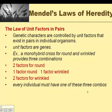Mendel also put forward some laws of heredity. The first law is the law of unit factors in pairs: genetic characters are controlled by unit factors that exist in pairs in individual organisms. Mendel didn't know about genes, chromosomes, or meiosis, so he referenced genes as unit factors. In a monohybrid cross for round and wrinkled, it provides three combinations: two factors for round, one factor for round and one factor for wrinkled, or two factors for wrinkled.